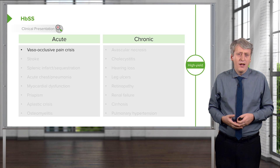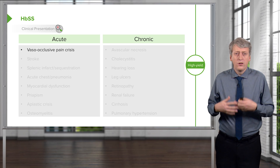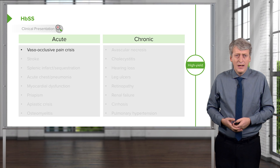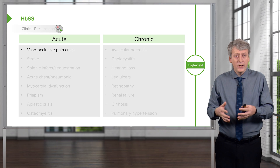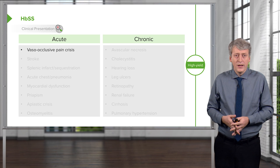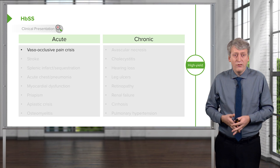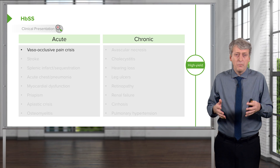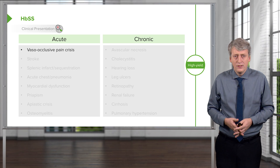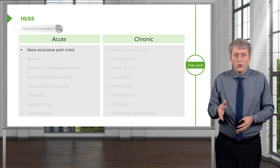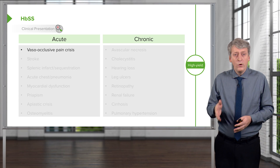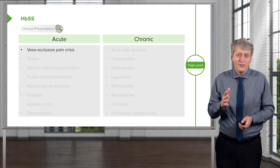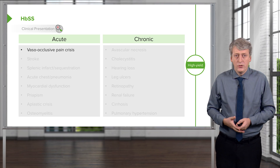They often have to be treated with large amounts of morphine for comfort. This is a complicated problem because they may become addicted to morphine and it may be difficult to distinguish a pain crisis from a non-pain crisis. It's important to know which patients have sickle cell disease, because pain is never a good option.